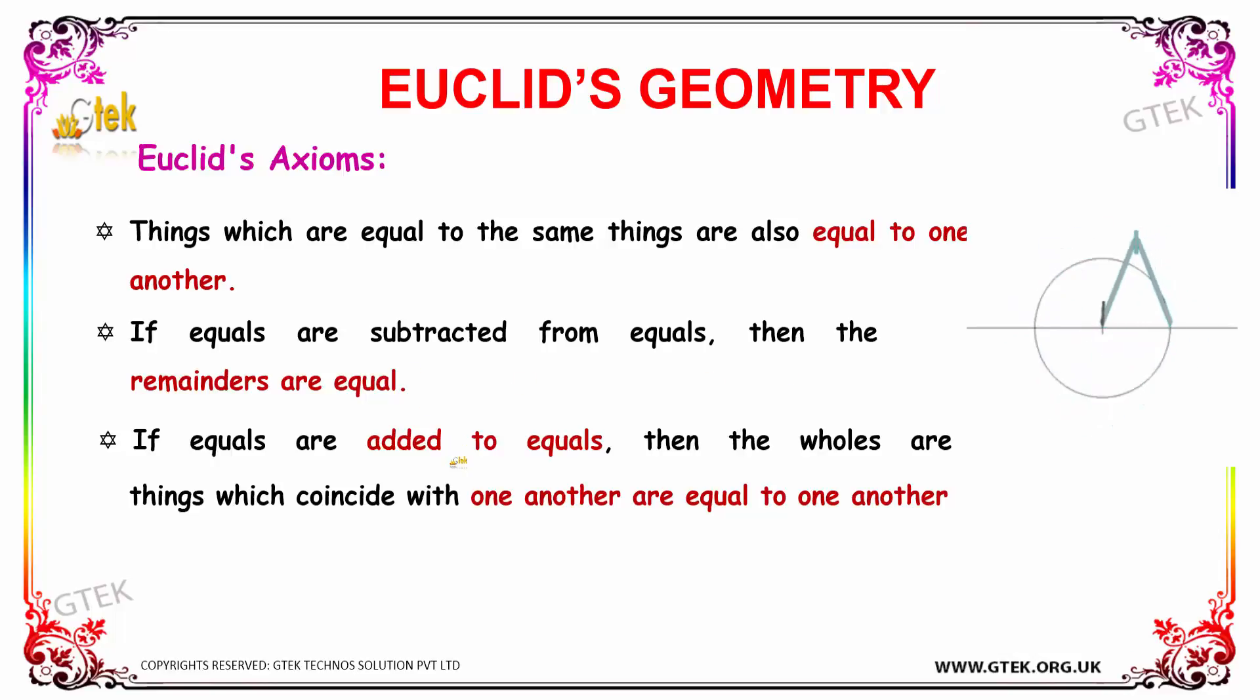And the next one is that if equals are added to equals, then the wholes are equal. Things which coincide with one another are equal to one another. So these are some of the statements in terms of Euclid's axioms.